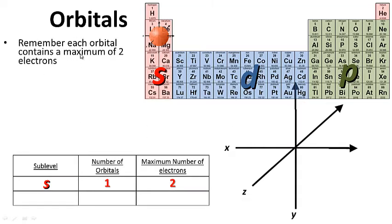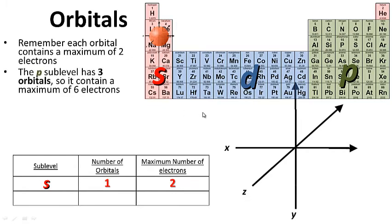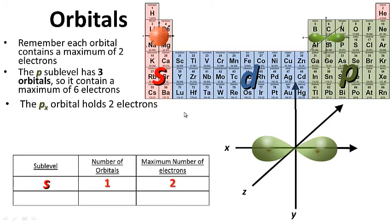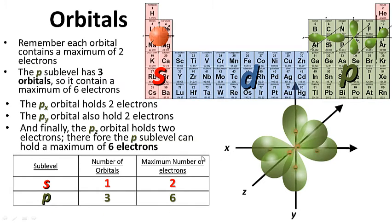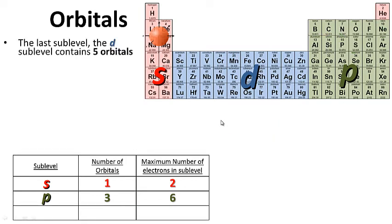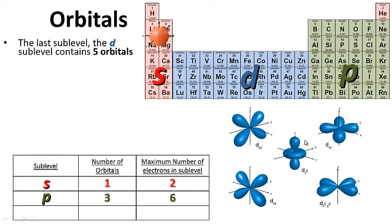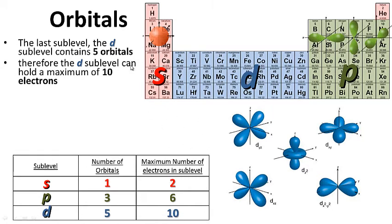Each orbital contains a maximum of 2 electrons. The P sublevel has 3 orbitals, so it contains a maximum of 6 electrons: the Px orbital holds 2, the Py orbital holds 2, and the Pz orbital holds 2 — a total of 6 electrons. The D sublevel contains 5 orbitals. We don't know the electrons' exact locations, but we believe they are in these orbitals. Therefore, the D sublevel can hold a maximum of 10 electrons — 5 times 2.